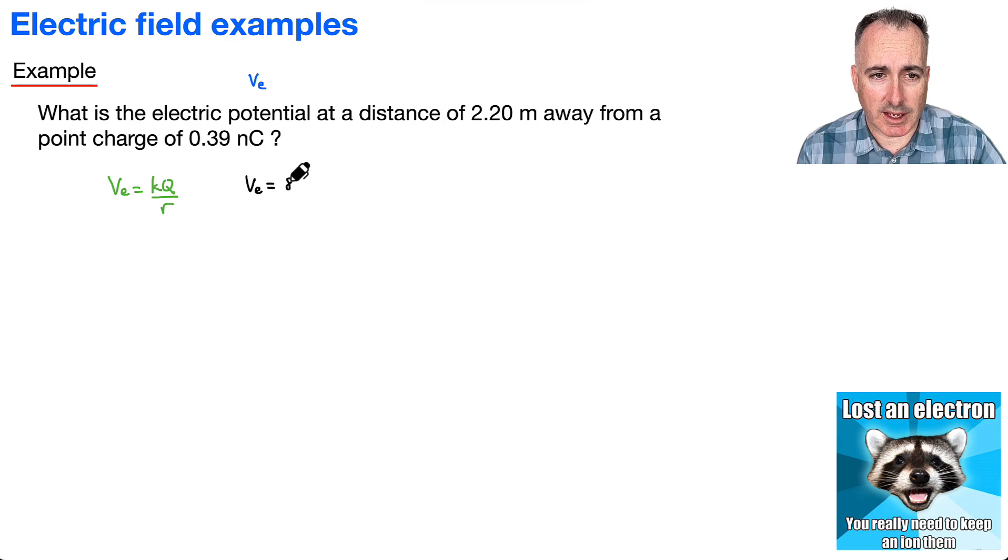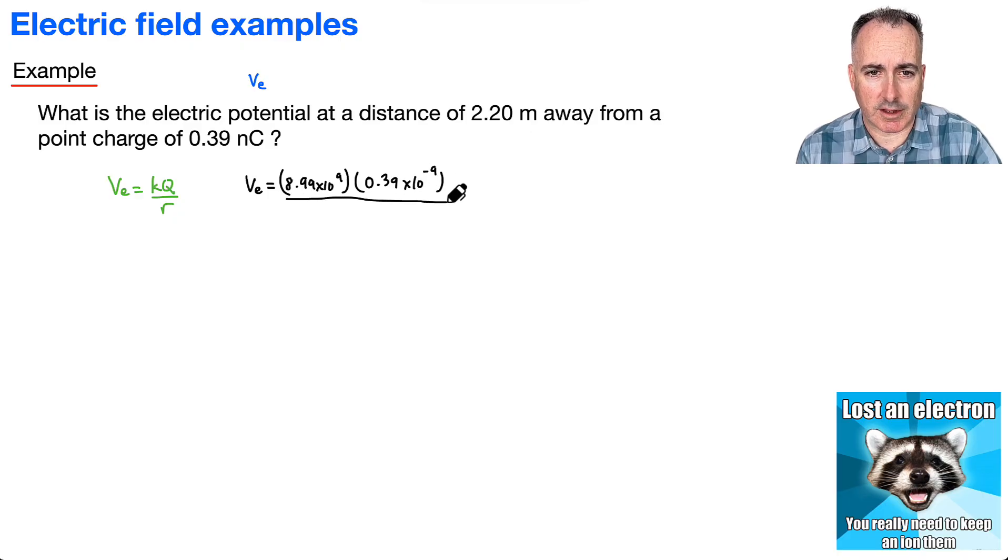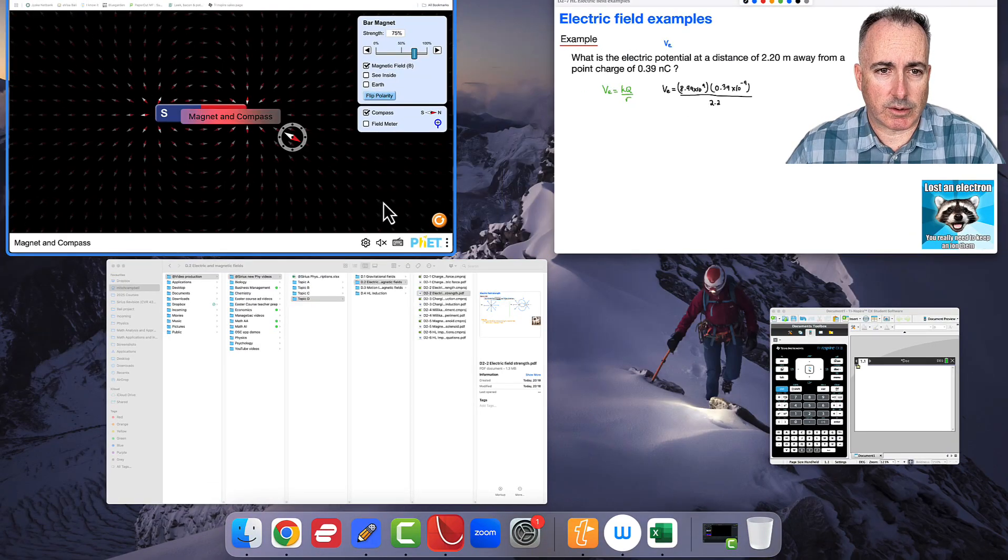So let's see. So this K is 8.99 times 10 to the 9. Q will be that charge, so it's going to be 0.39. And remember what a nano is. It's 10 to the minus 9. And I'm going to divide all that by 2.2. I'll just use my calculator, and away I go.